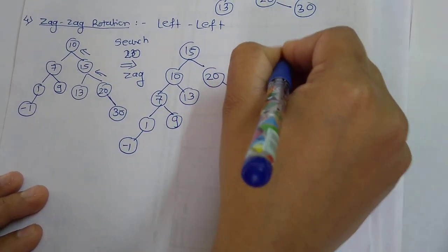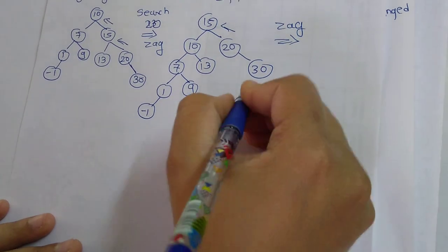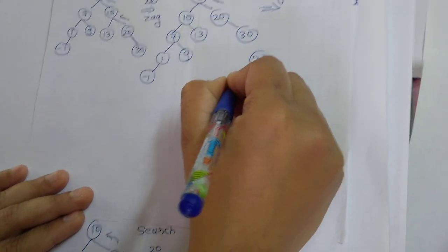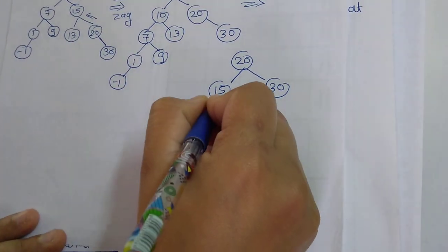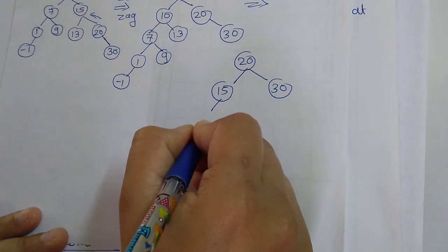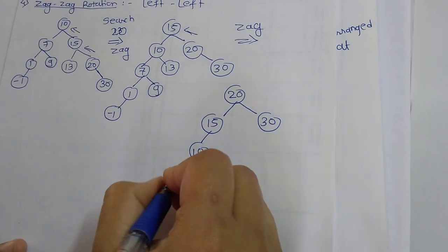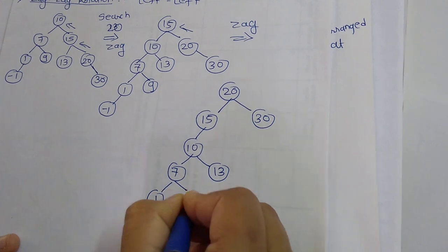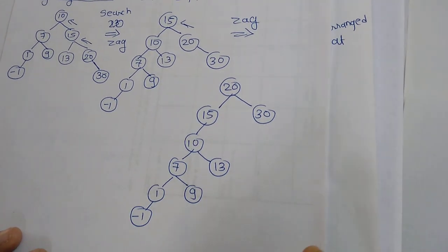Next, the second zag operation: I rotate 20 up. So 20 will be the root. 15 is the left of 20 and 30 is the right of 20. The remaining tree draws as is: 10 is the left of 15, 13 is the right of 10, 7 is the left of 10, 1 is the left of 7, 9 is the right of 7, and minus 1 is the left of 1.